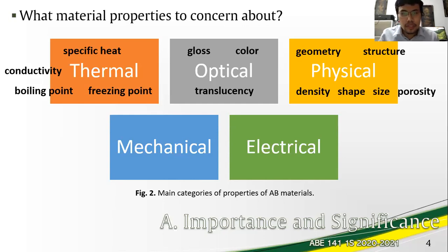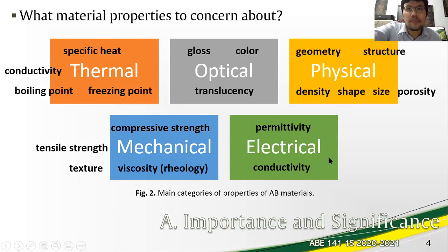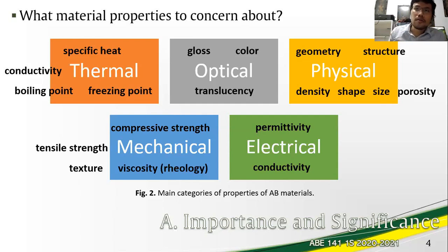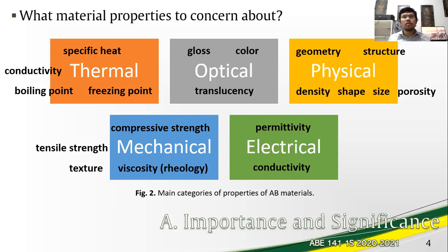The electrical properties consider the material attributes in relation to the collective nature of the microscopic electron. Electricity and magnetism are phenomena relying on the electron structure and behavior in an AB material. Listed here are permittivity — a measure of the dielectric property of a material — and conductivity. The course will focus merely on the dielectric property of AB materials.